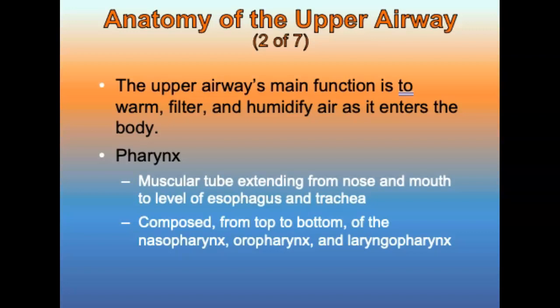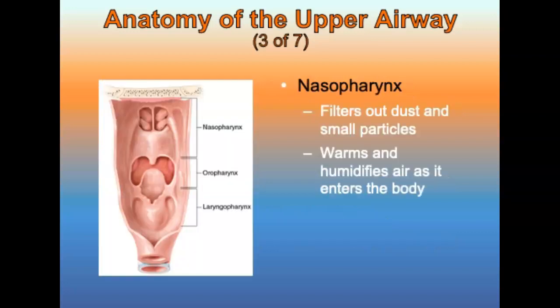The pharynx is the muscular tube extending from the nose and mouth to the level of the esophagus and trachea. It is composed from top to bottom of the nasopharynx, oropharynx, and laryngopharynx. The nasopharynx is lined with ciliated mucous membranes that filter out dust and small particles, and it warms and humidifies air as it enters the body.